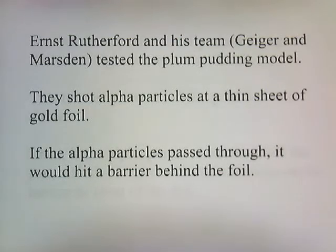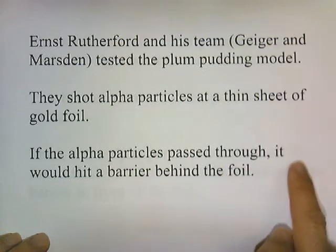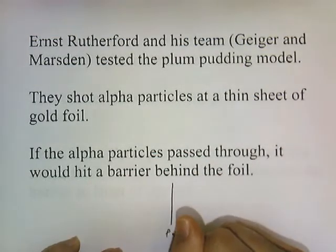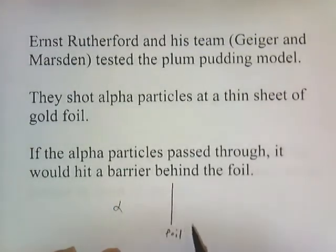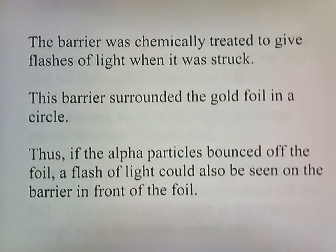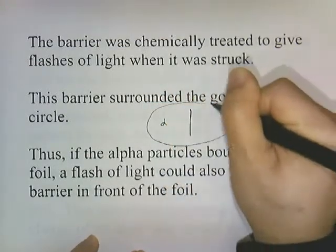Gold foil can be pounded very thin — maybe 400 atoms of gold thick — very close to a single layer of gold atoms. If the alpha particles passed through the gold foil, they would hit a barrier behind the foil. The alpha particles have a positive charge. The barrier was chemically treated to give flashes of light when struck, and this barrier surrounded the gold foil in a circle. So if alpha particles bounced off the foil, a flash of light could be seen on the barrier in front of the foil.